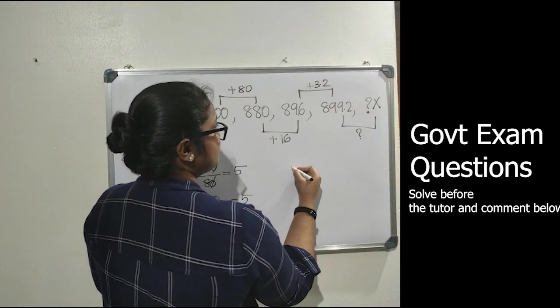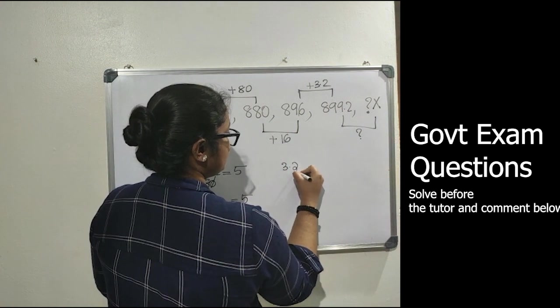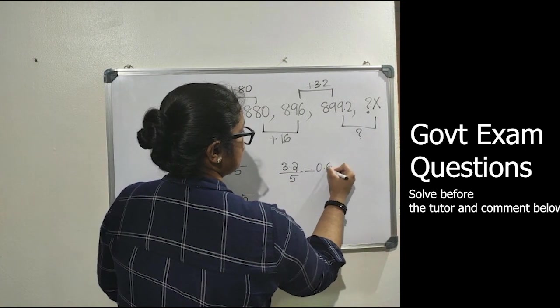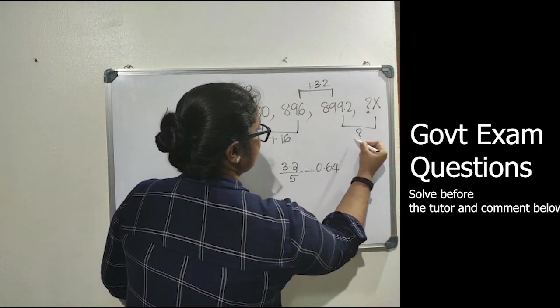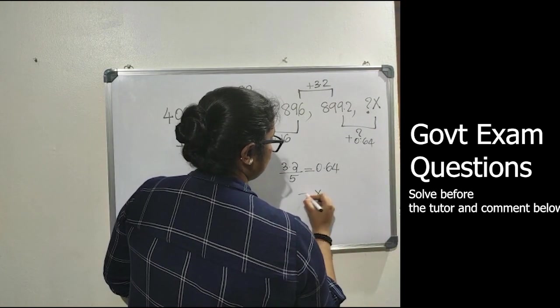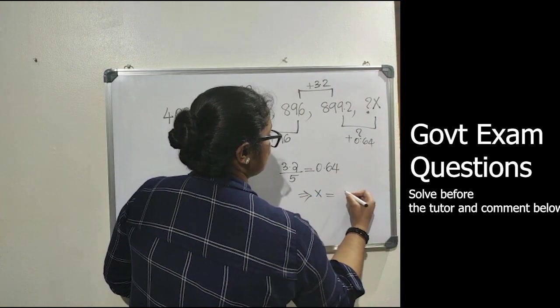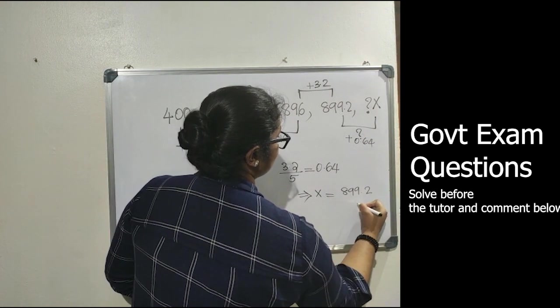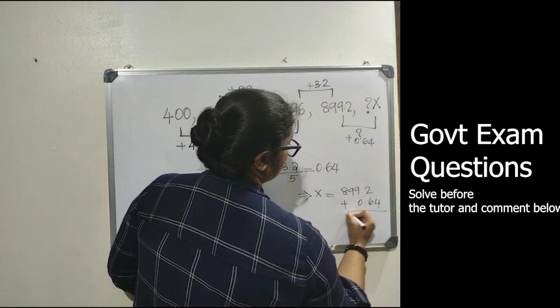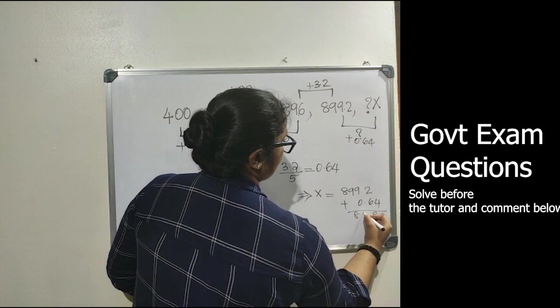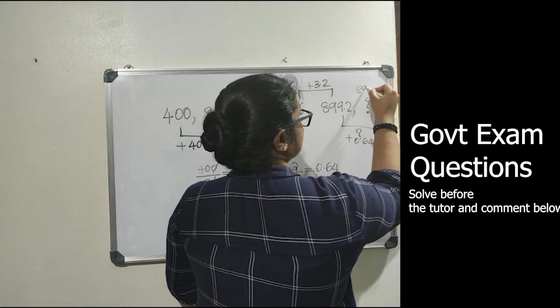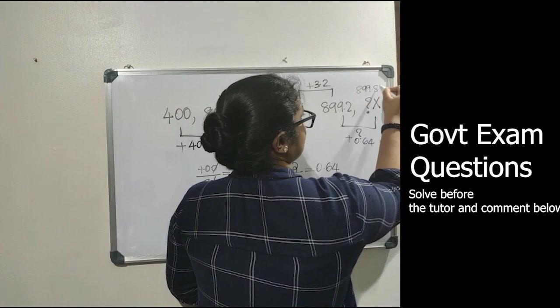So the next term will be 3.2 divided by 5, that is 0.64. That implies x equals 899.2 plus 0.64, which equals 899.84. So the value of x equals 899.84.